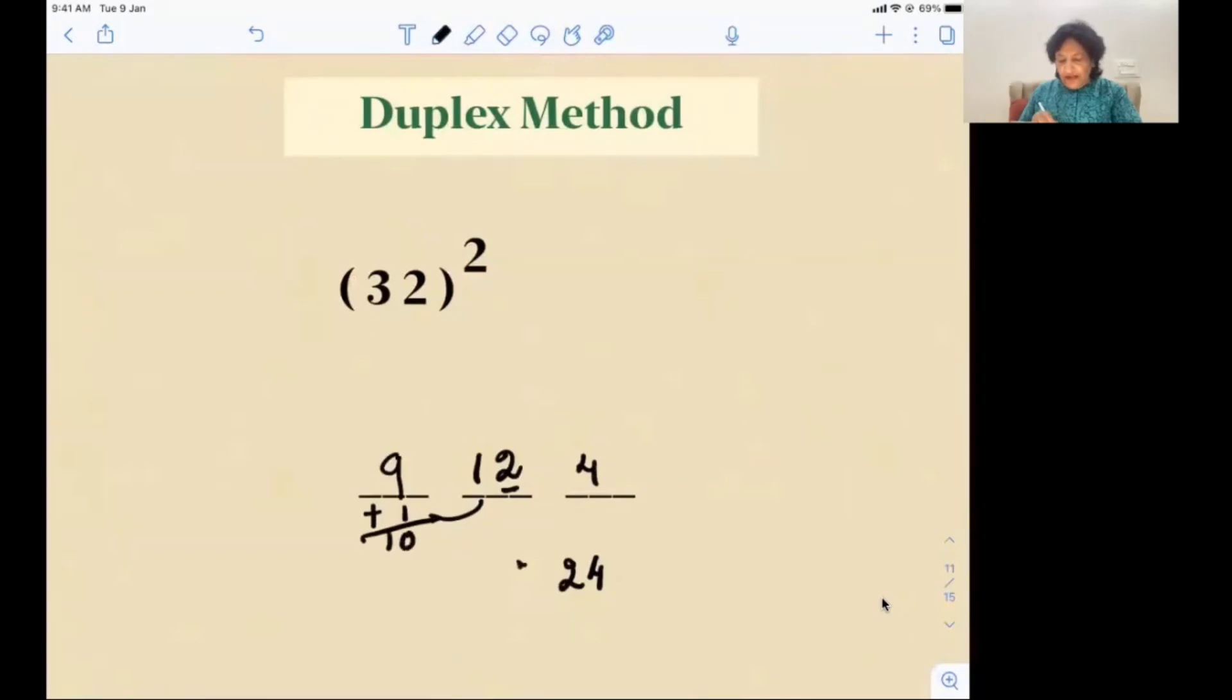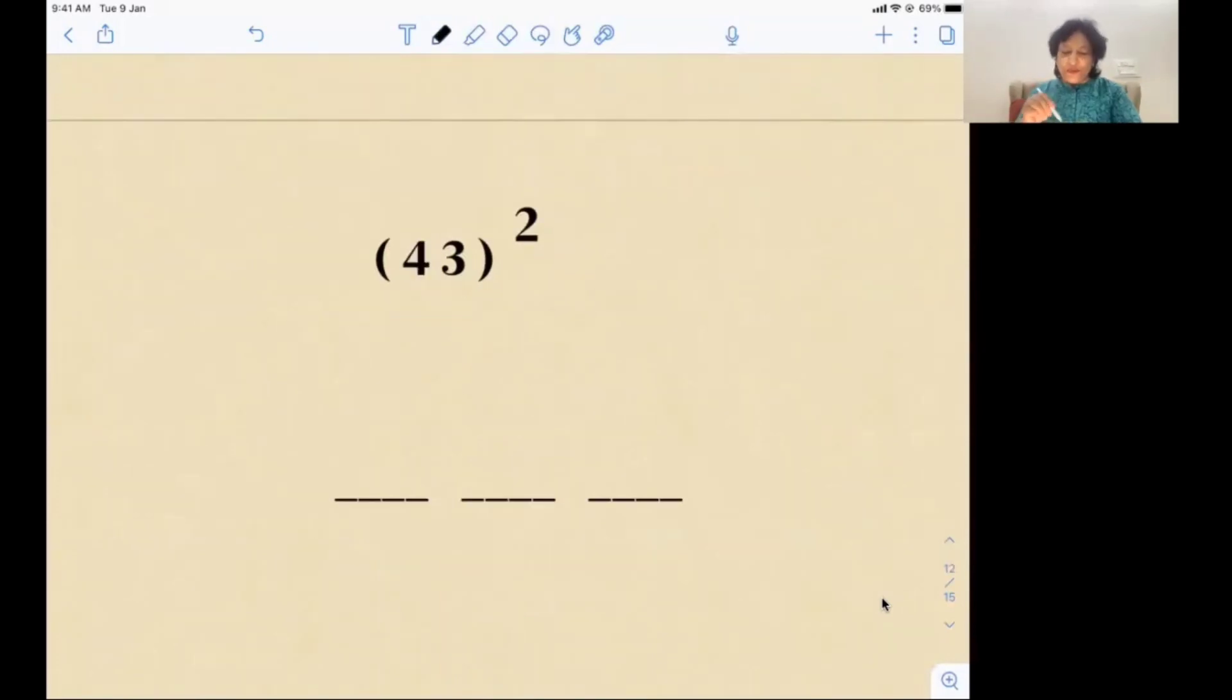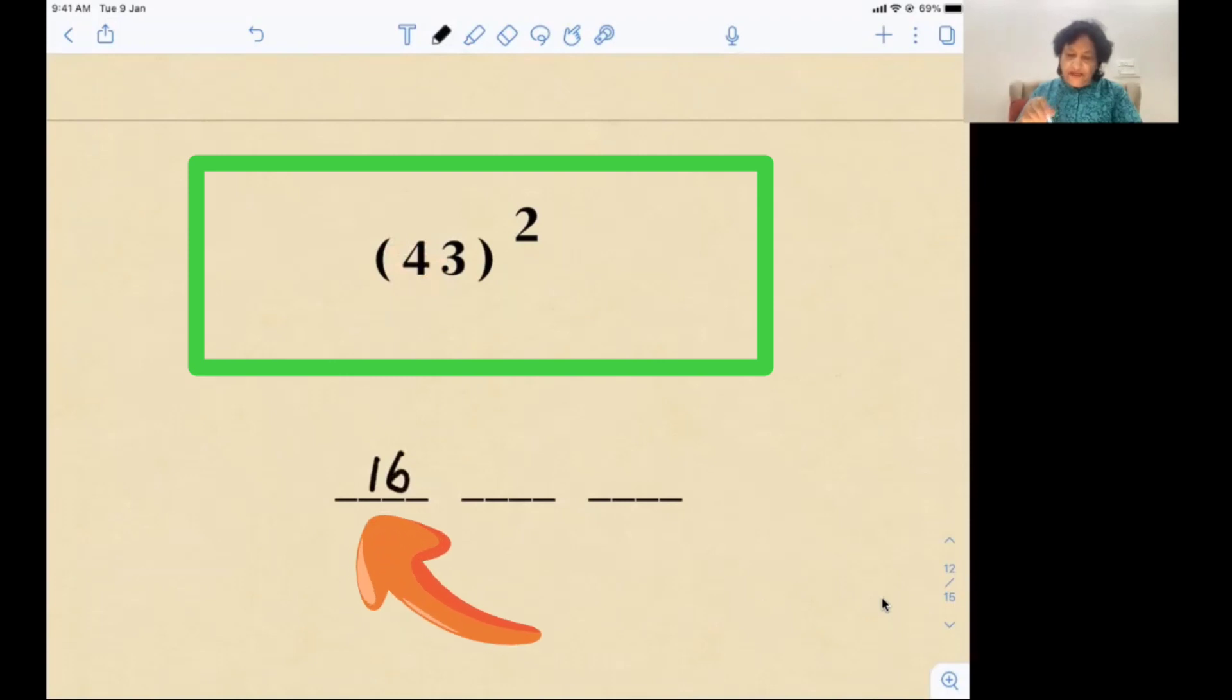Now let's do 43 squared. The tens digit: four squared is 16, that's right over here. Next is four into three into two, that means twice four into three. Four three is 12, and two times 12 is 24, so we have 24 over here.